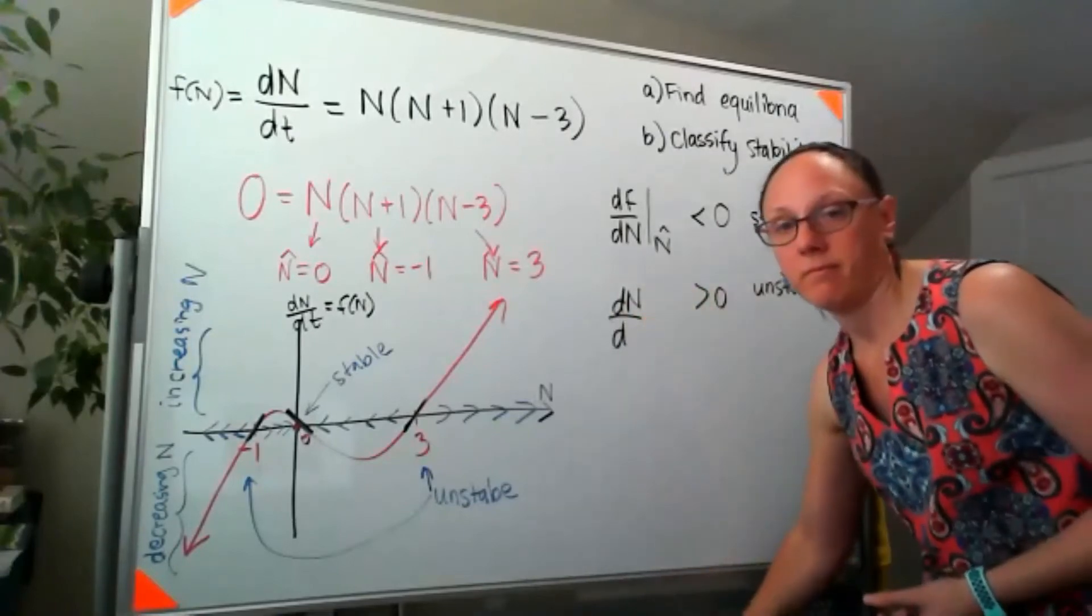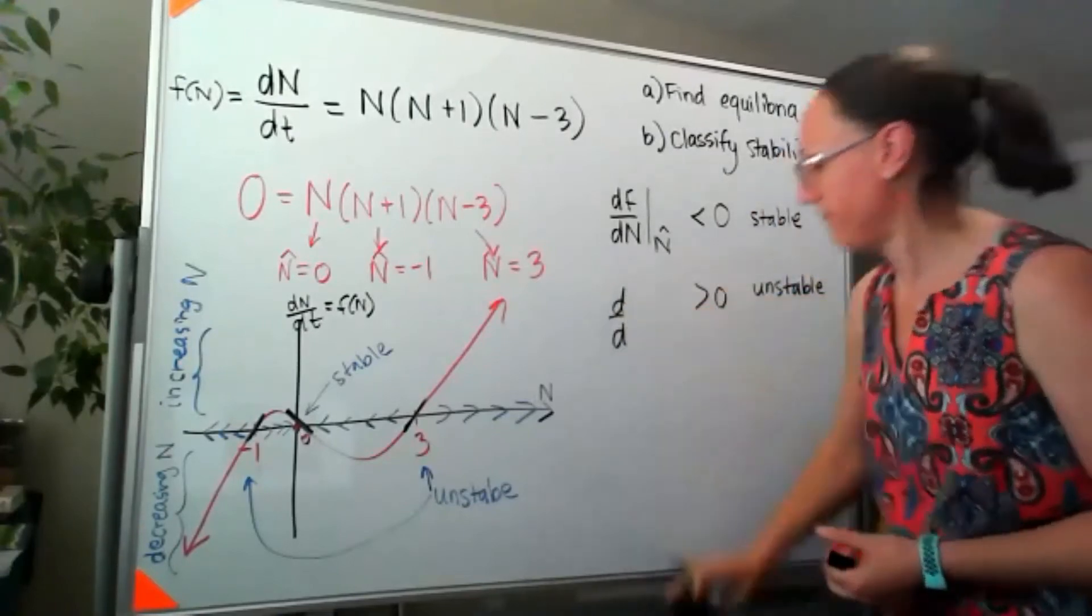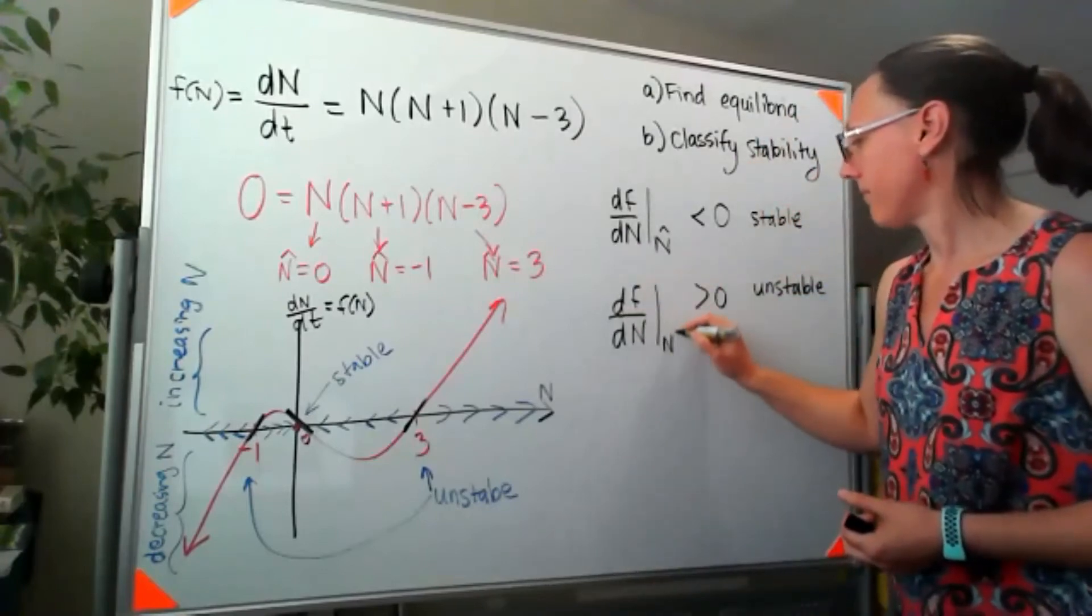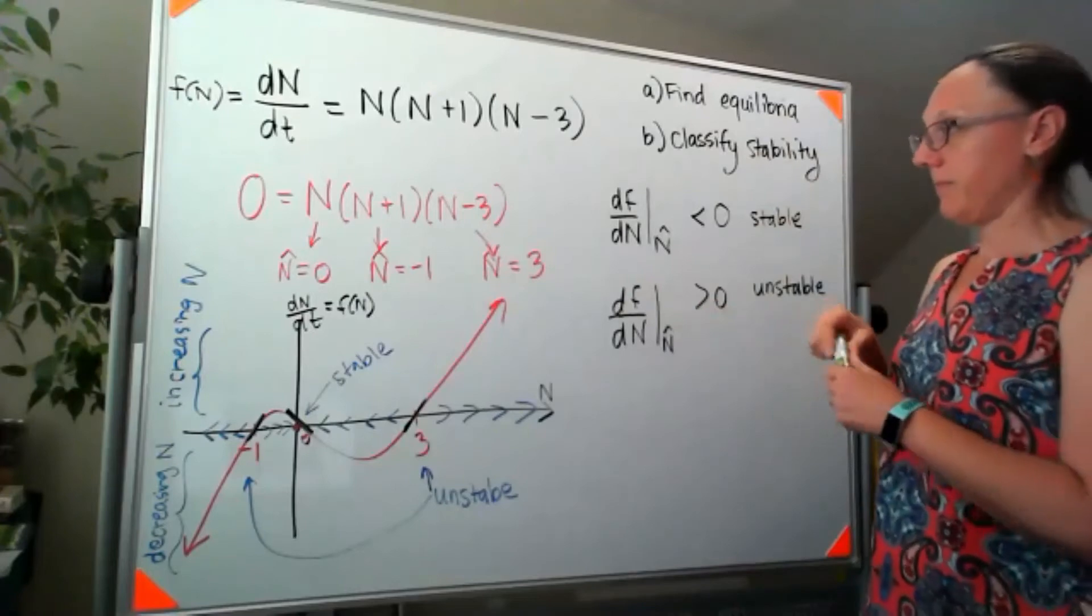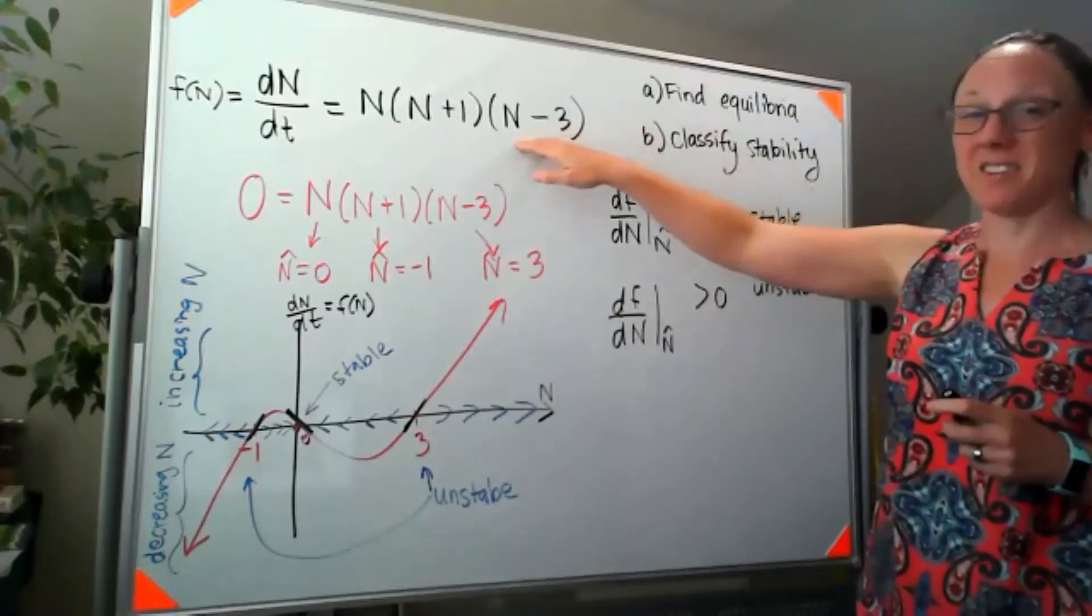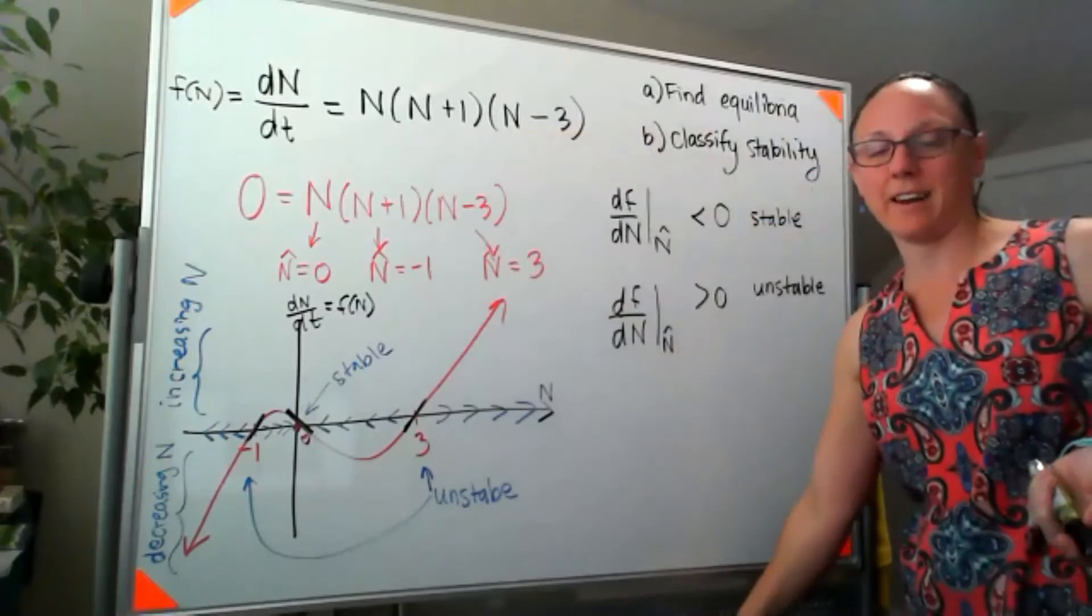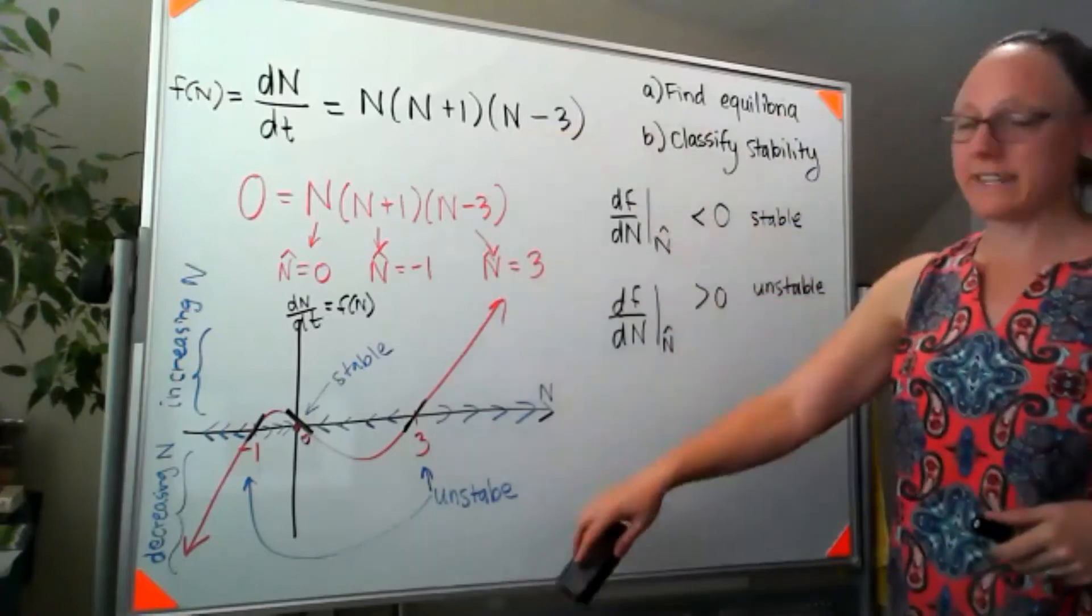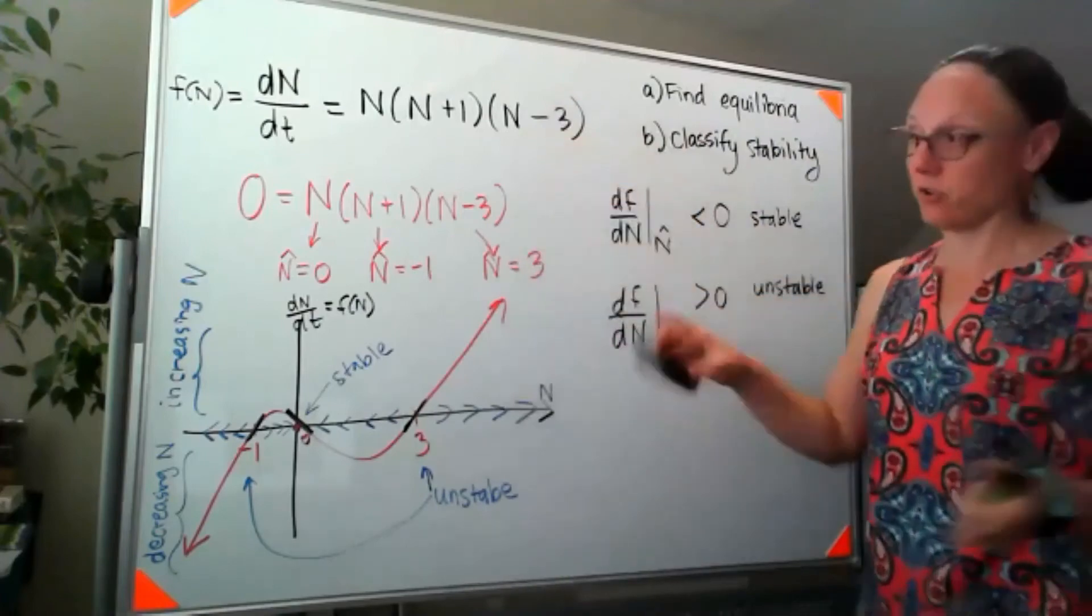Oops, how about df/dn? I'm going to have to take the derivative of this, which means that I need a little bit of space. So I'm going to erase our phase diagram so that we can do this the other way.